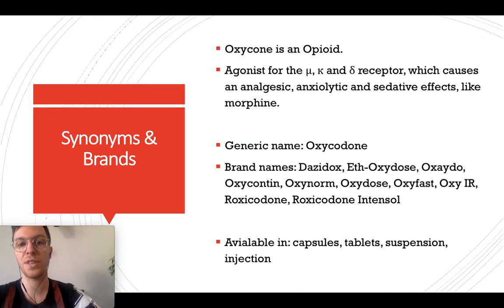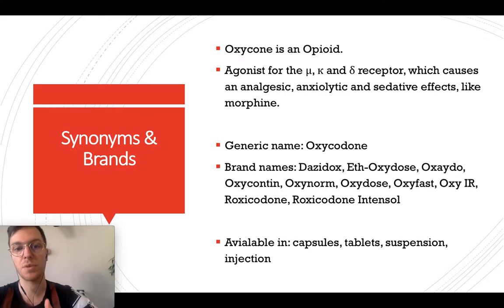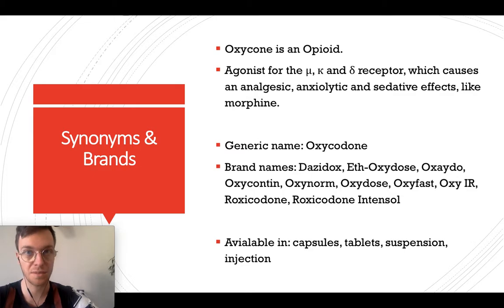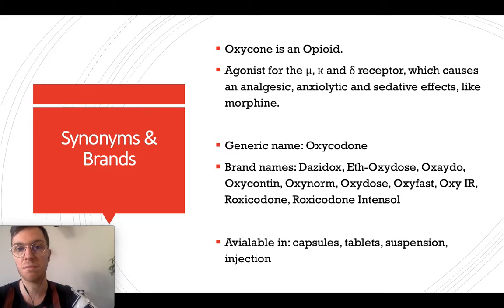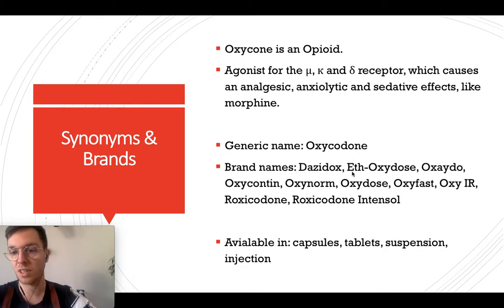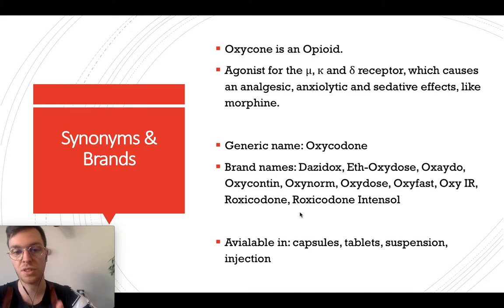Oxycodone is an opioid and is an agonist for mu, kappa, and delta receptors, which cause an analgesic, anxiolytic, and sedative effect, and it works much like morphine. The generic name is oxycodone, and it is known under brand names like OxyContin, OxyNorm, OxyDose, and others.